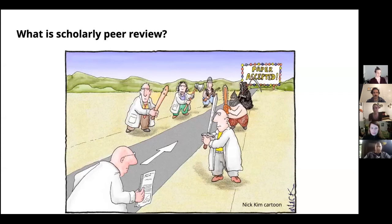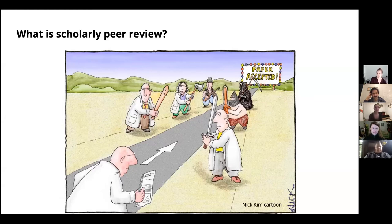I assume that if you were attracted by this title, you know what scholarly peer review is, but just in case: scholarly peer review is the process by which research and research output is evaluated by peers. The goal is to make sure that whatever ends up being disseminated and published is sound and rigorous and has a certain standard of quality.